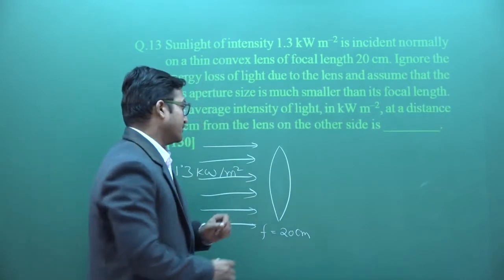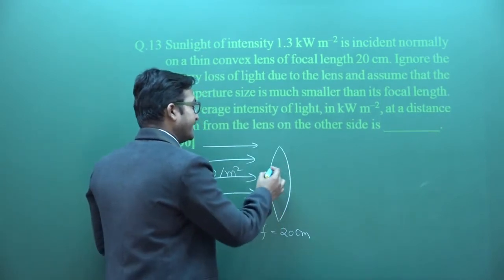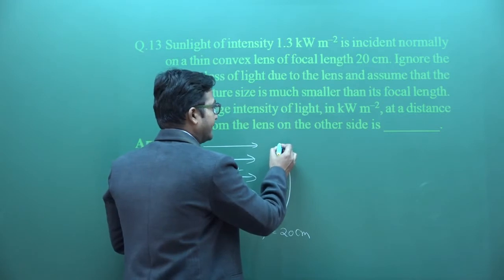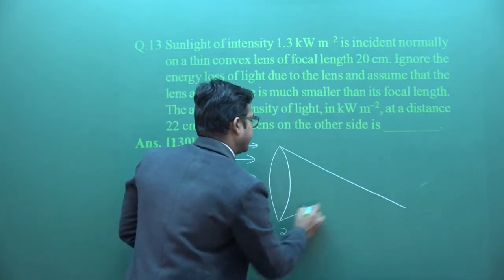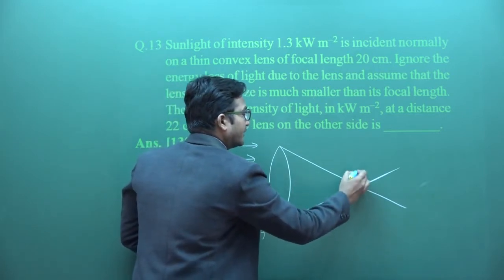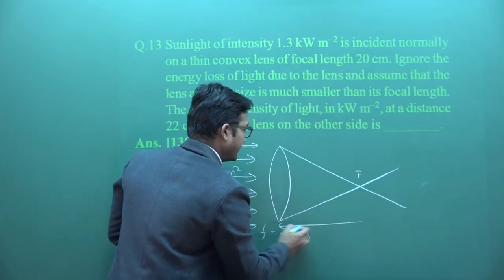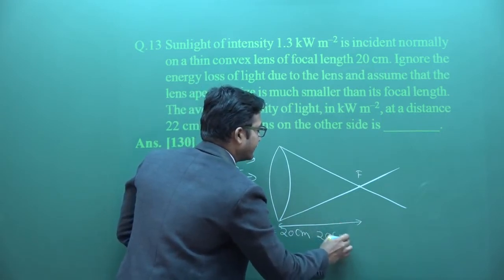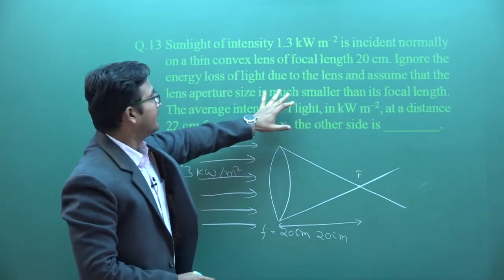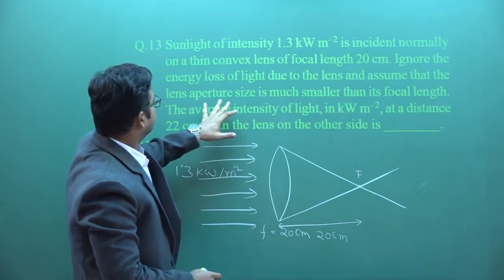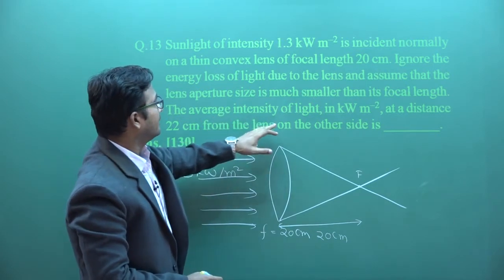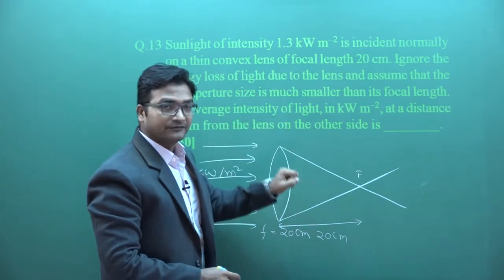When sunlight falls on the whole aperture, it converges at the focus point. The distance is 20 centimeters. The question asks us to ignore any kind of energy loss and the aperture of the lens, and find the average intensity of light at a distance of 22 centimeters from the lens on the other side.